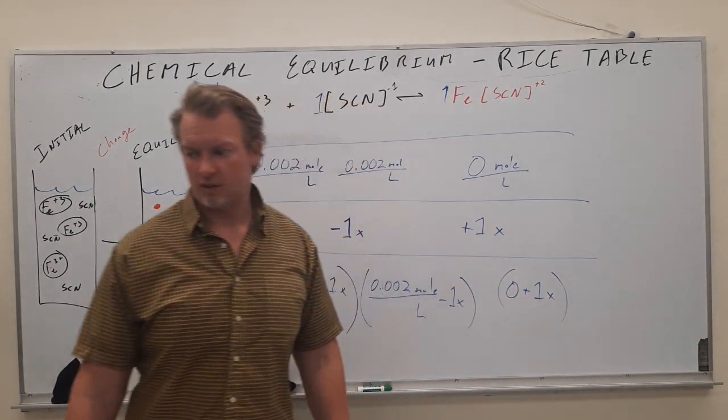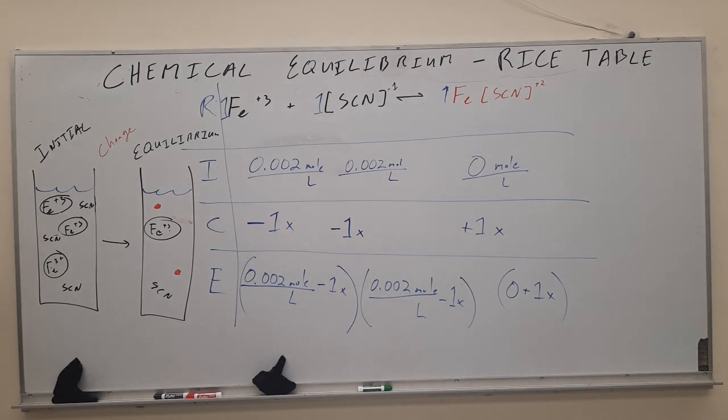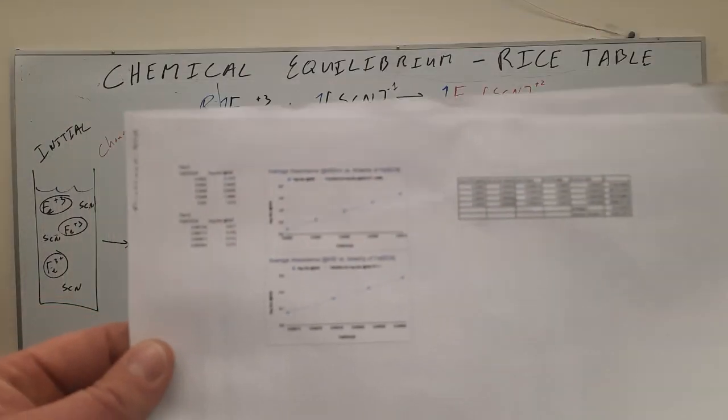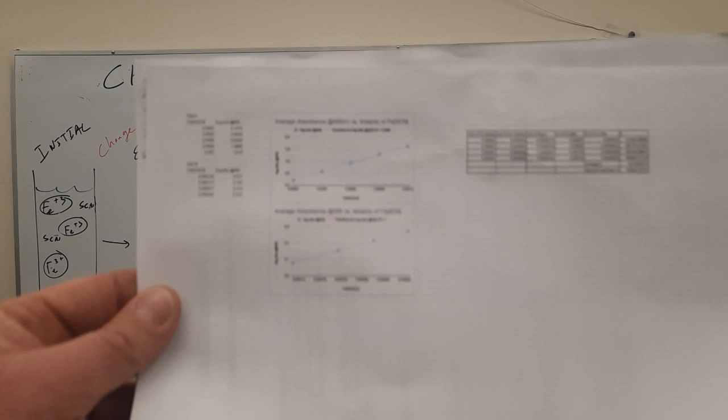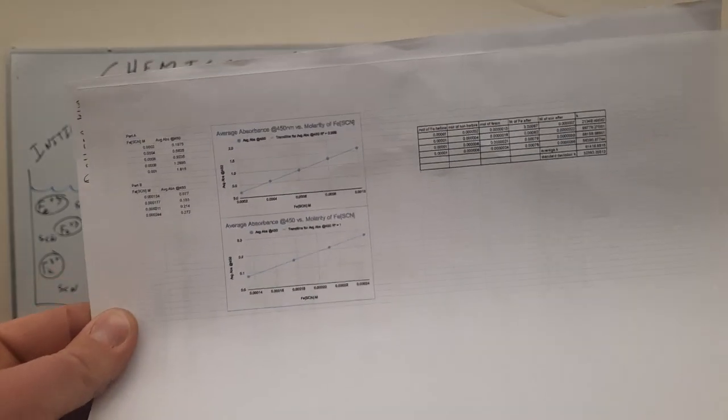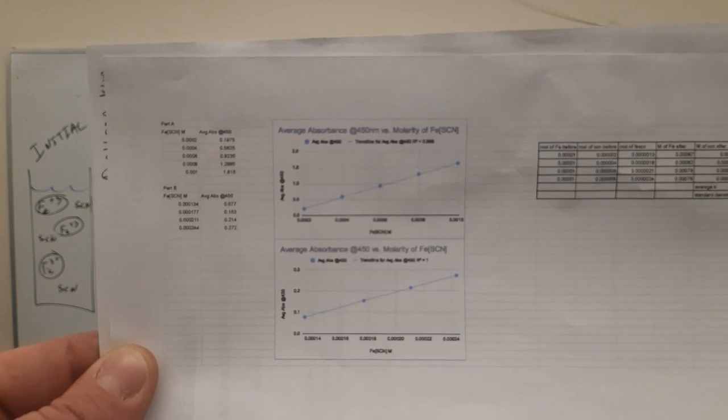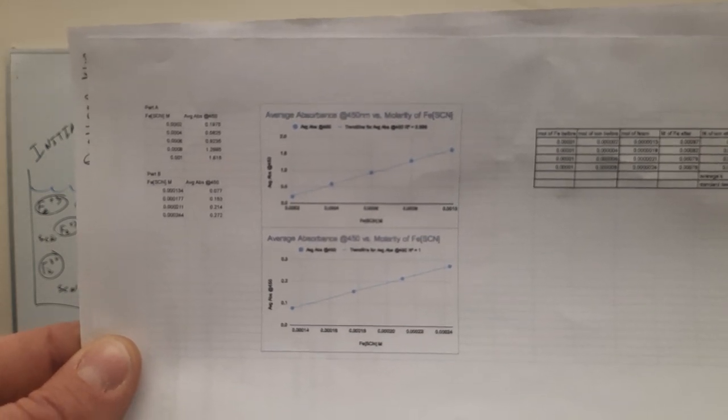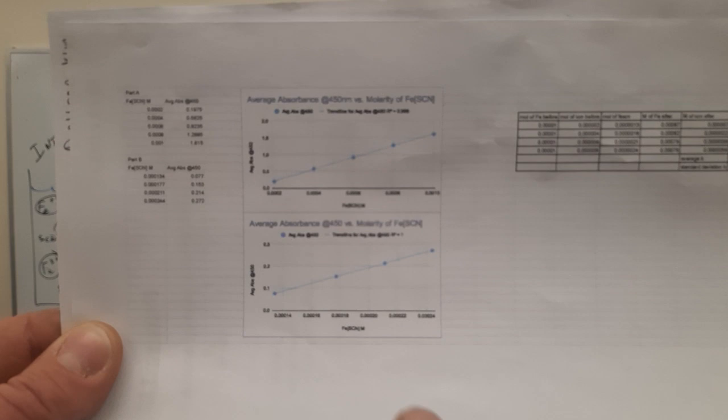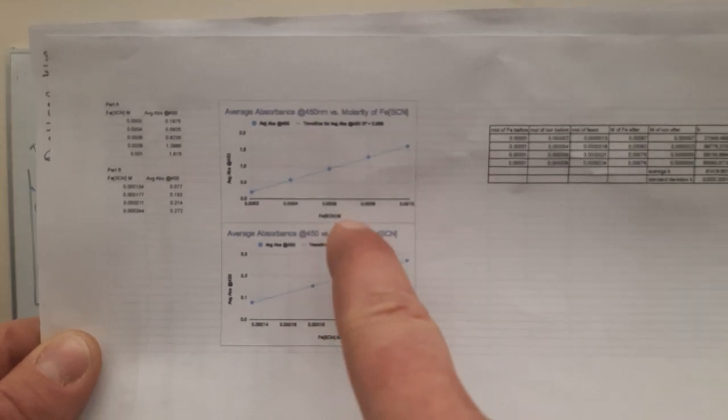For this right here, I'm just going to take a number. Here is a calibration curve of somebody else in the course. I'm trying to get this in focus here. This is absorbance on the y and molarity of iron thiocyanate on the x. And I'm looking at this top graph right here.